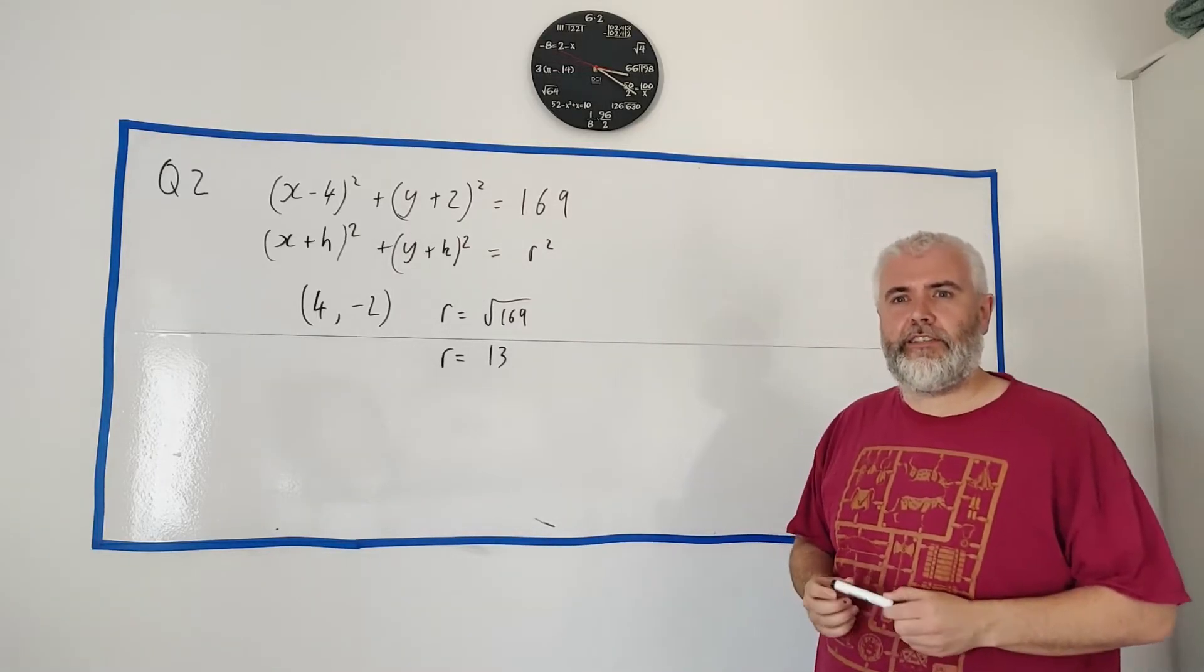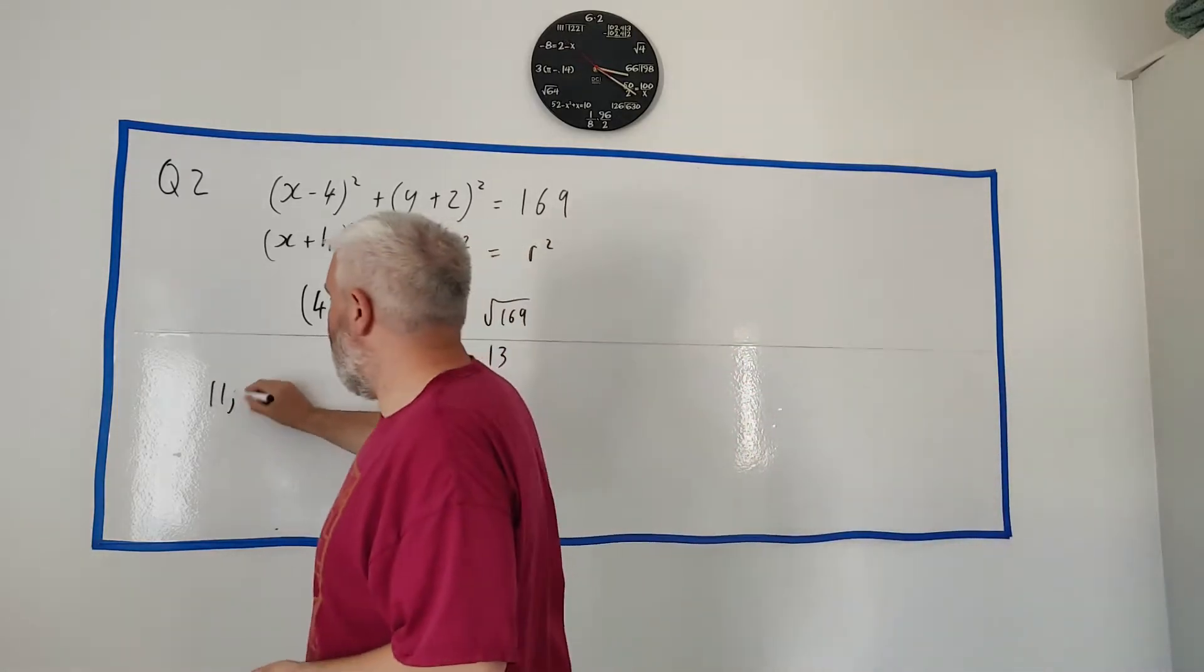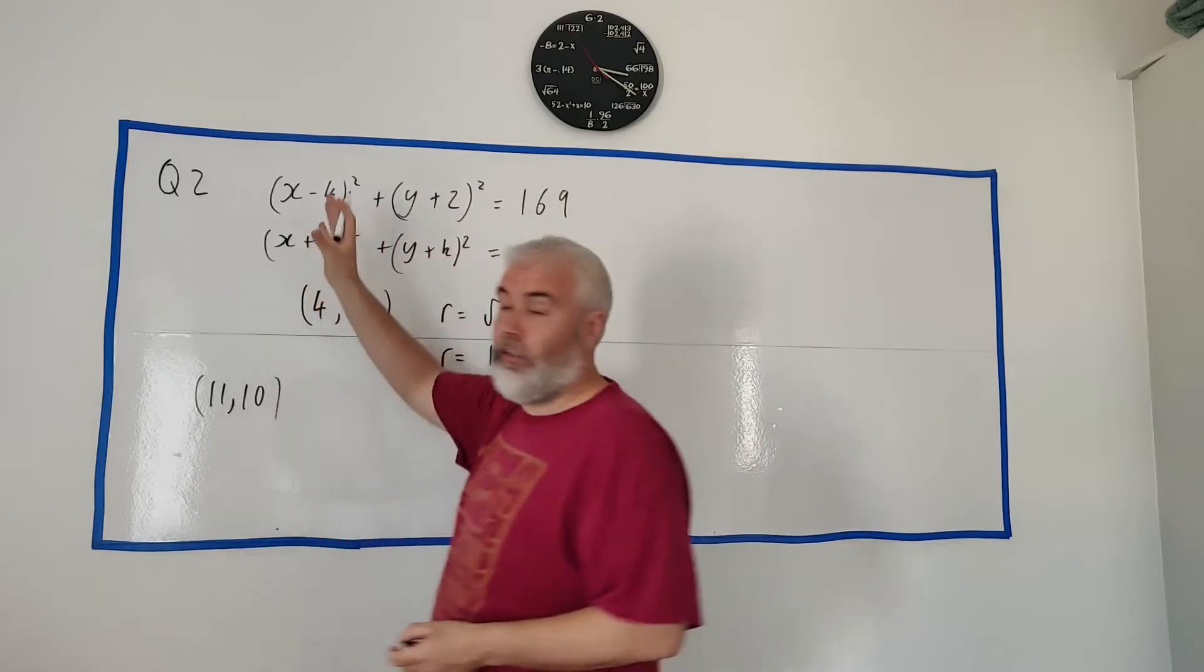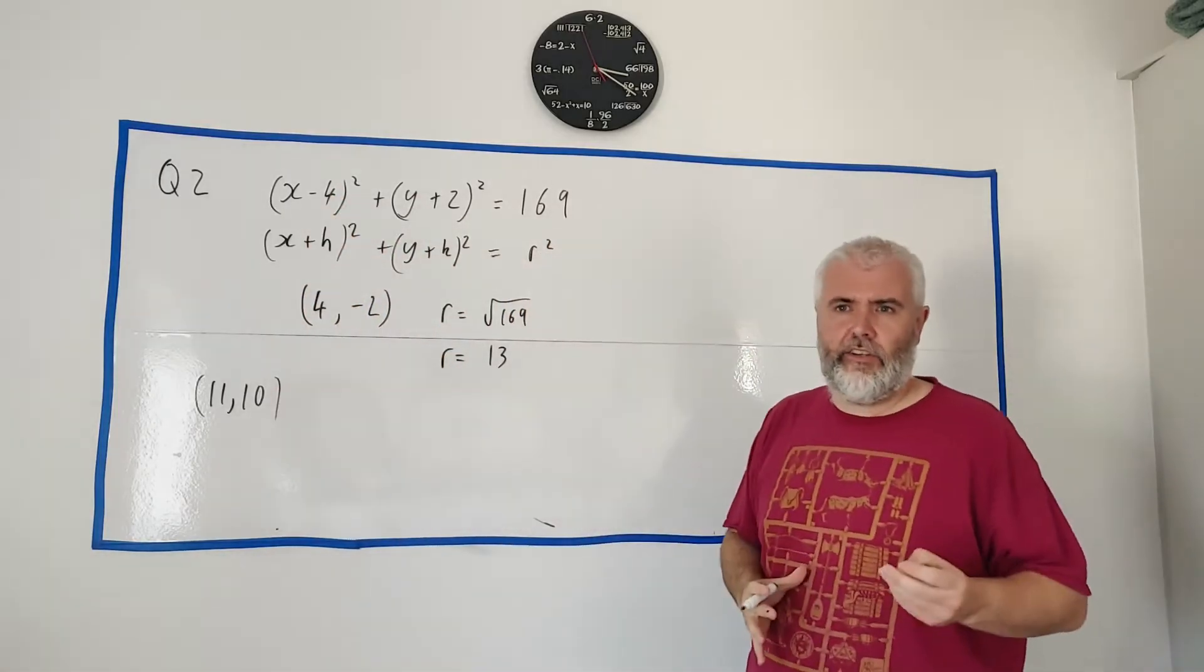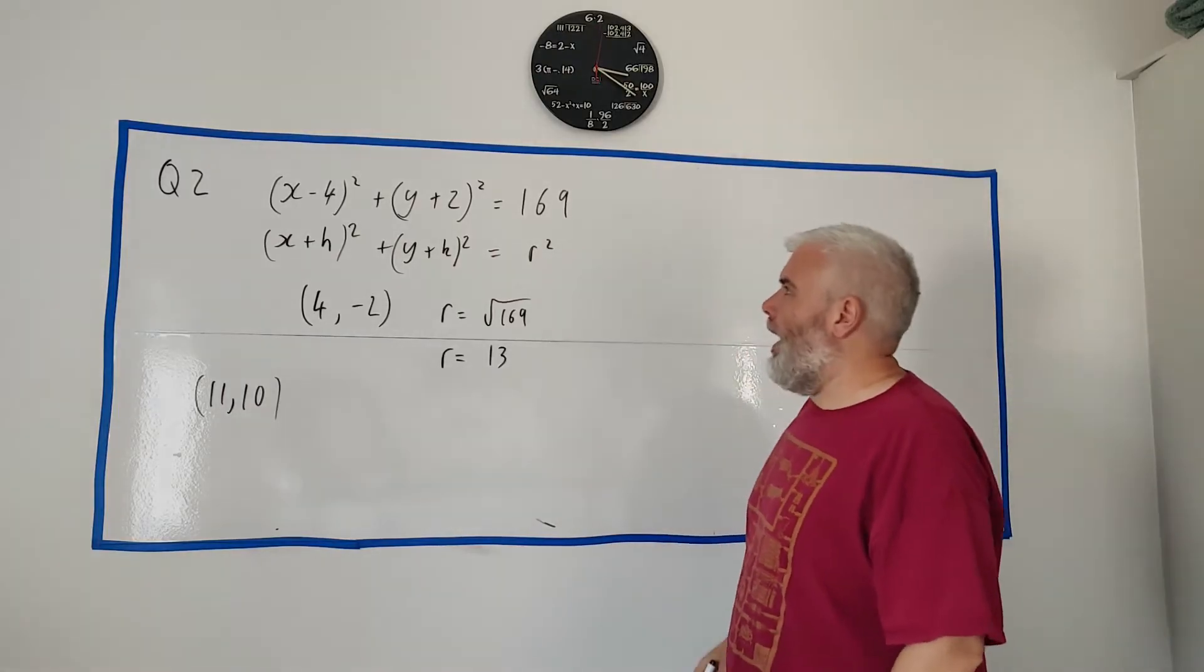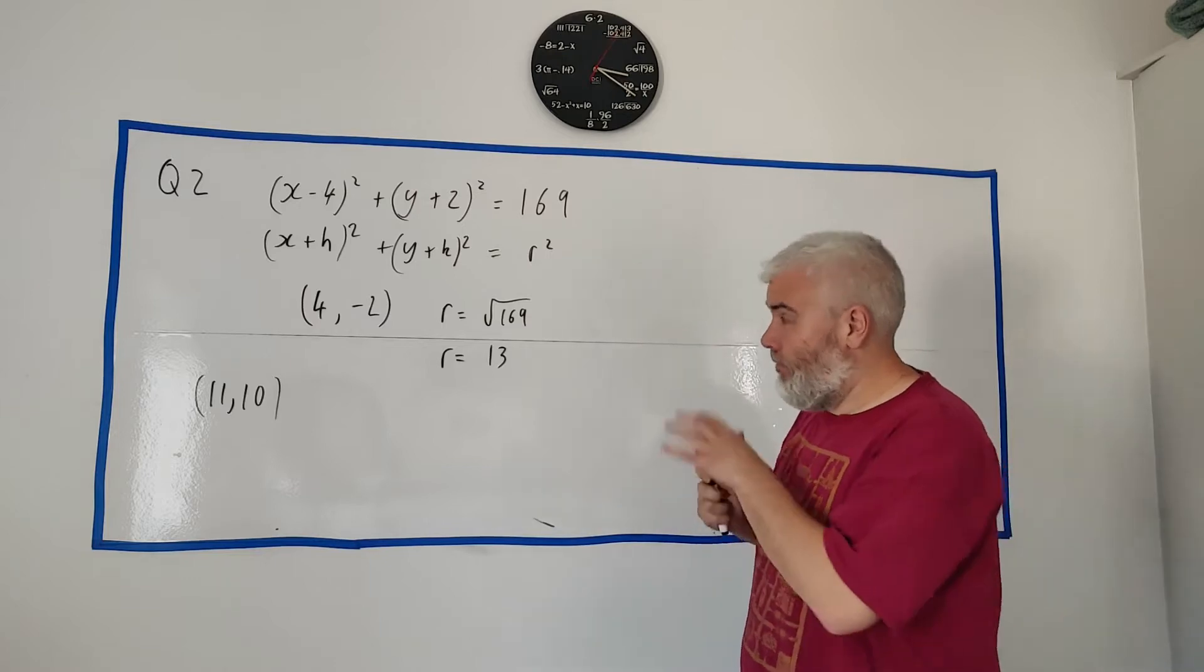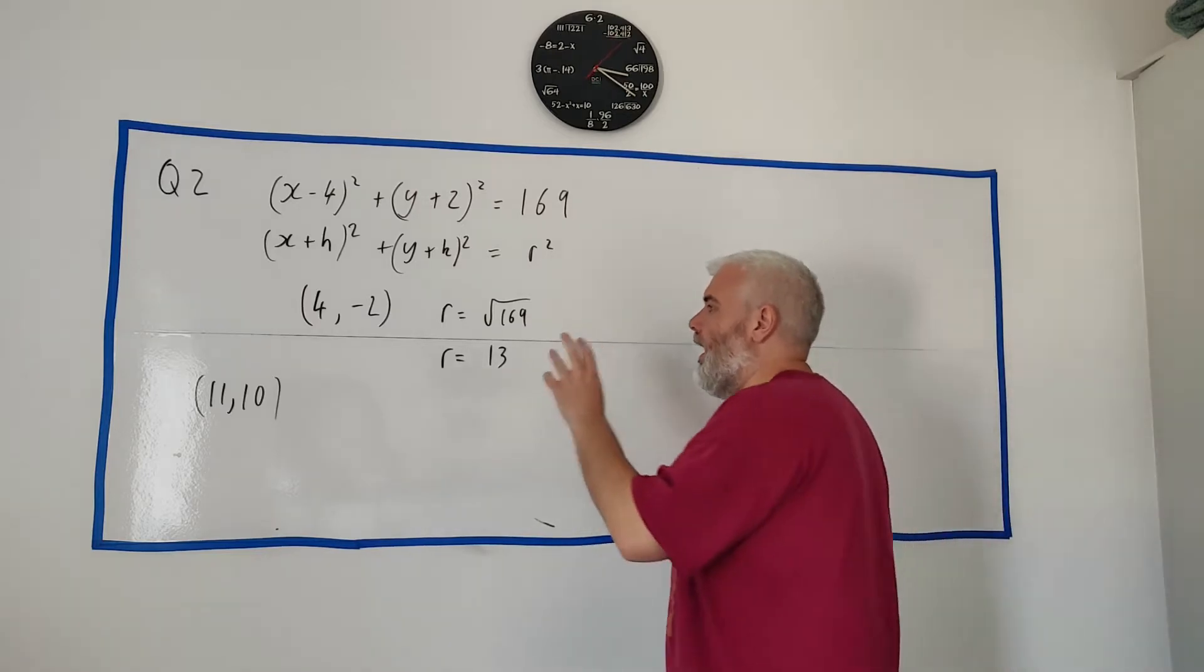For part 2, they ask us, is the point (11,10) on this circle, or is it inside the circle, or is it outside the circle? Very common question. So hopefully you know how to do this coming into an exam.